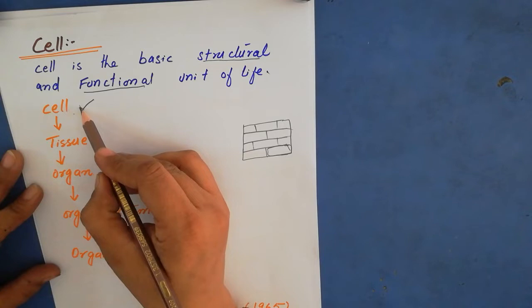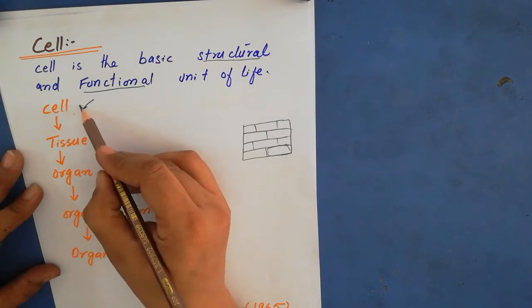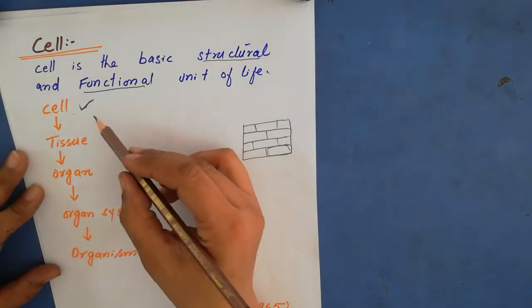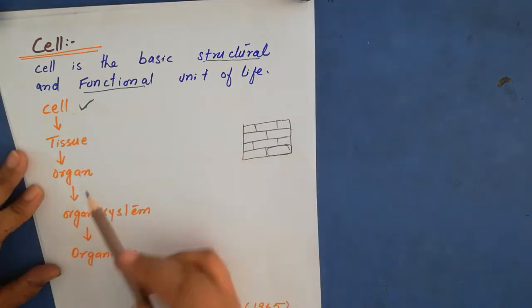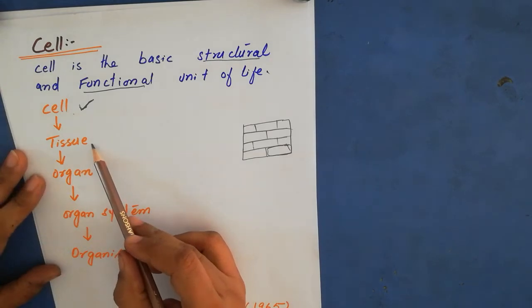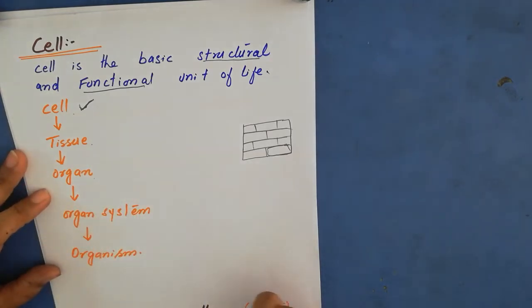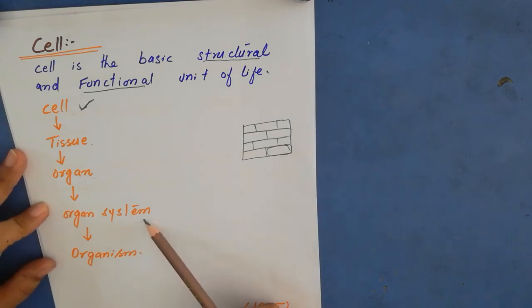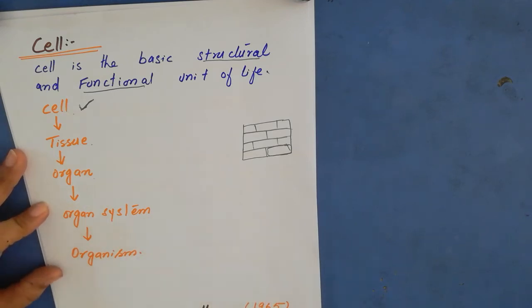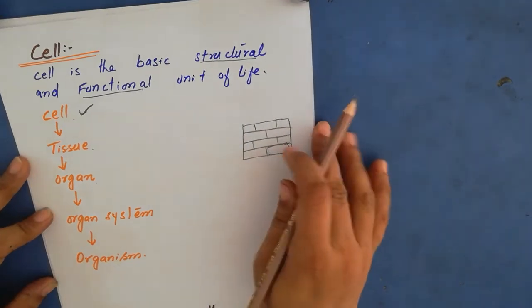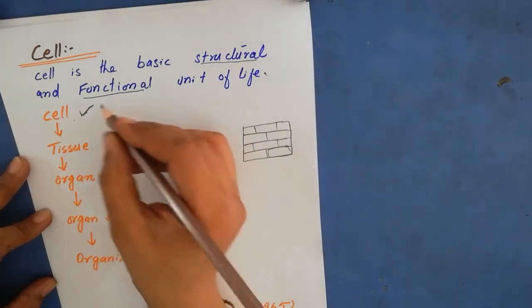How do cells combine? Cells combine with each other and make tissue. Tissues combine to make an organ. Different organs combine to make an organ system, and different systems combined make the organism.